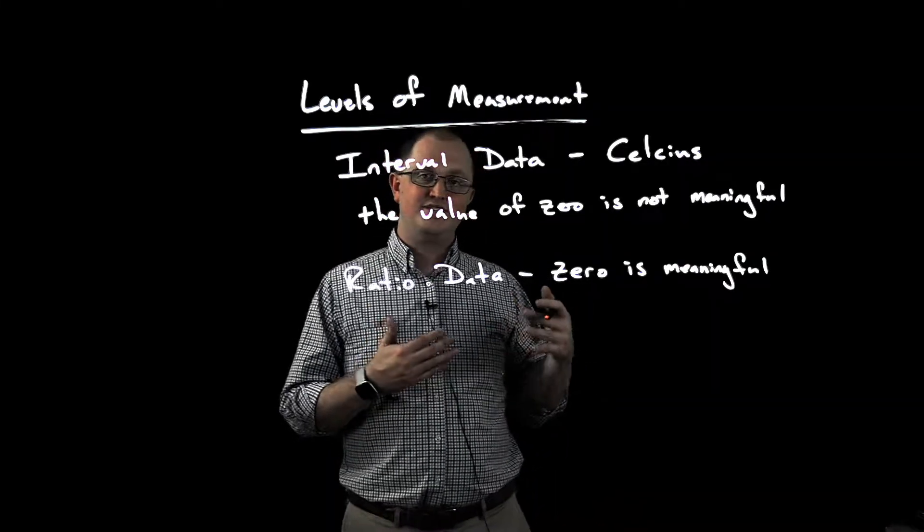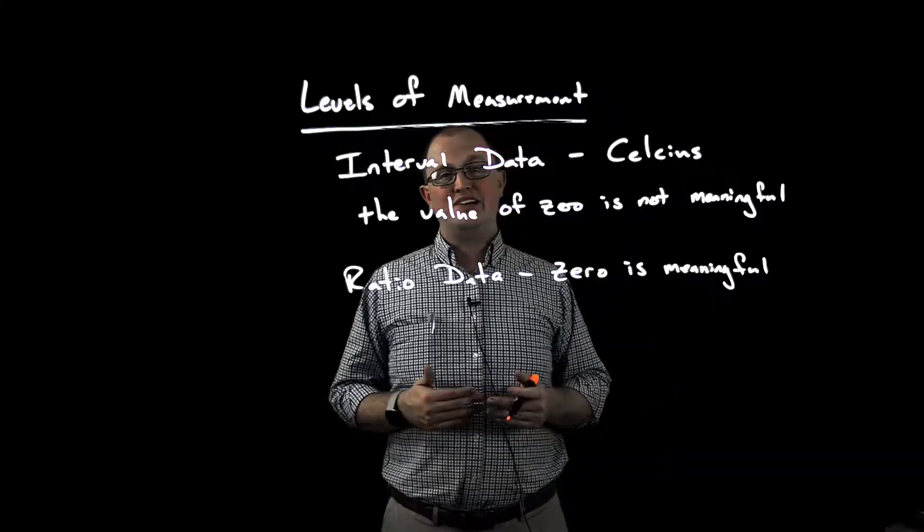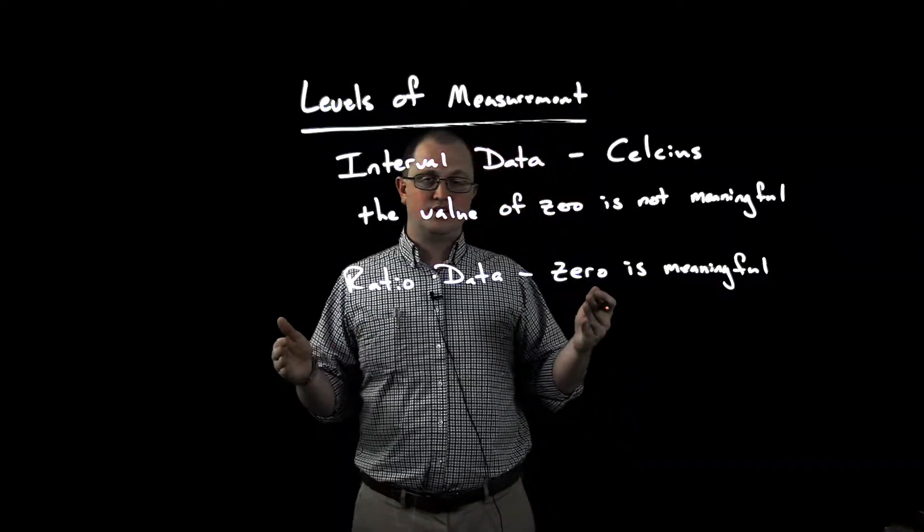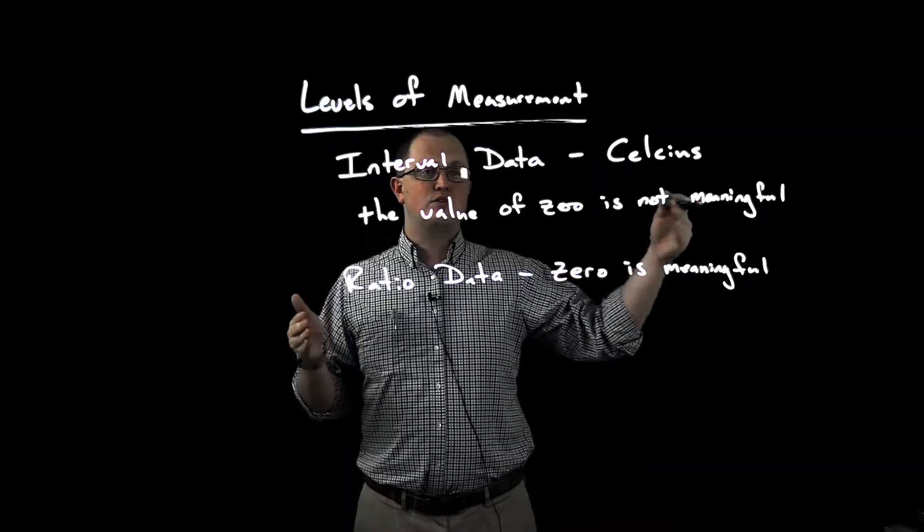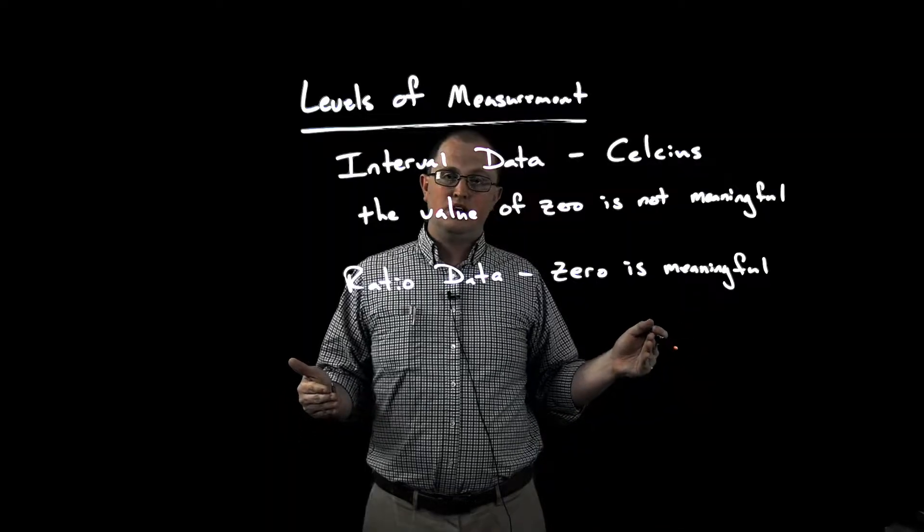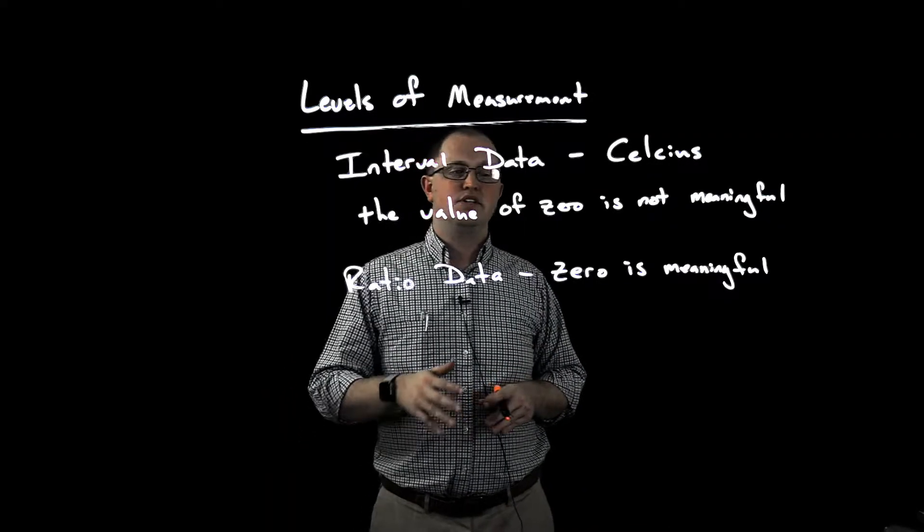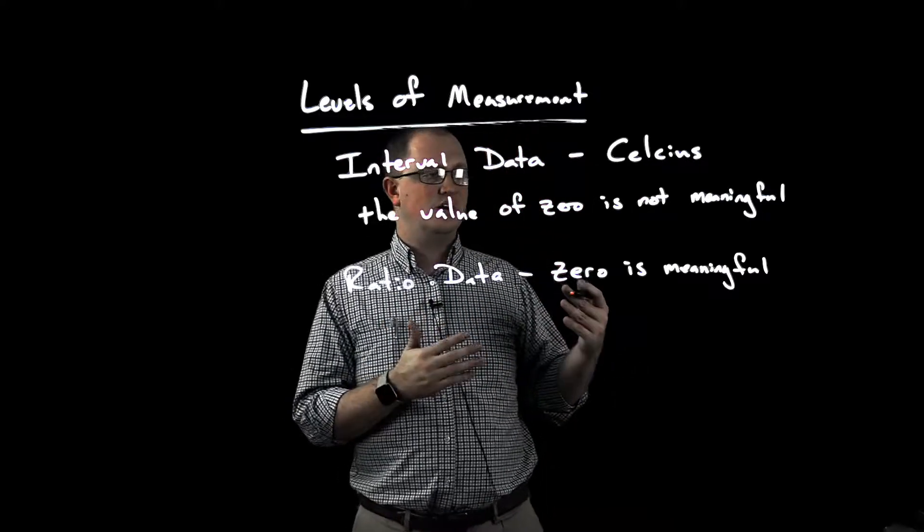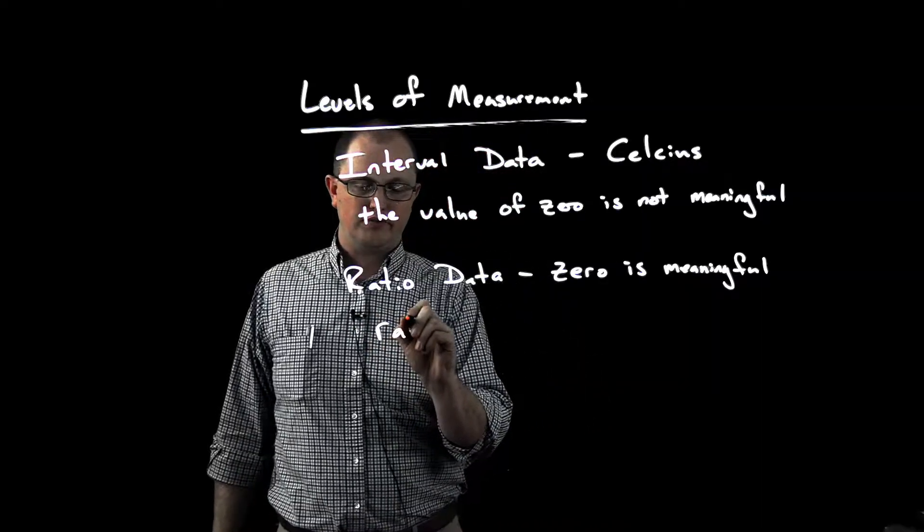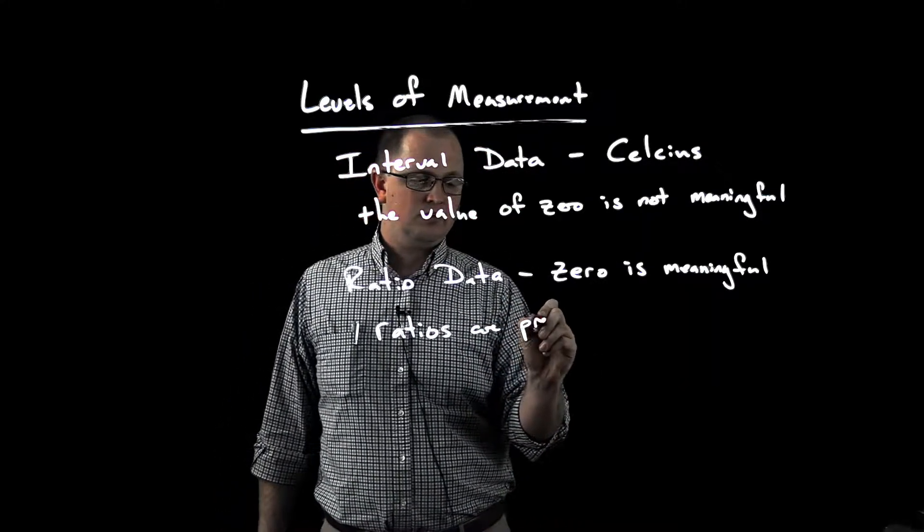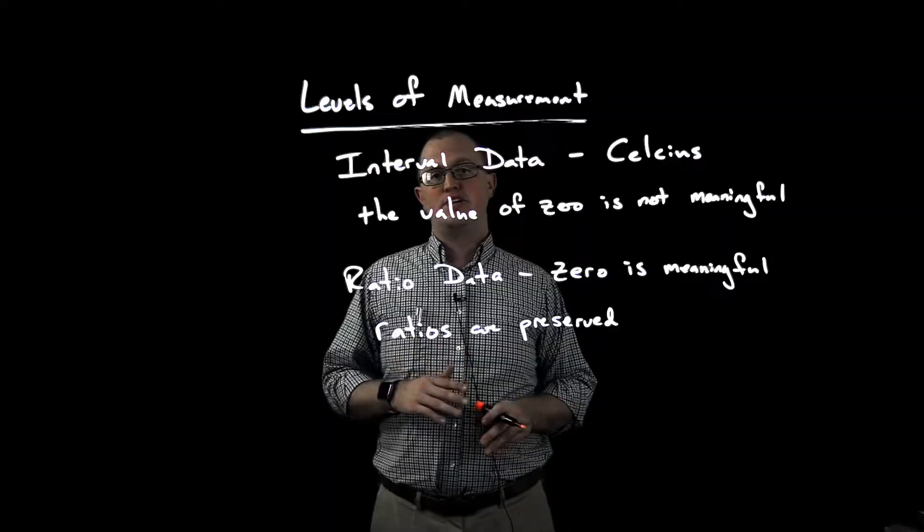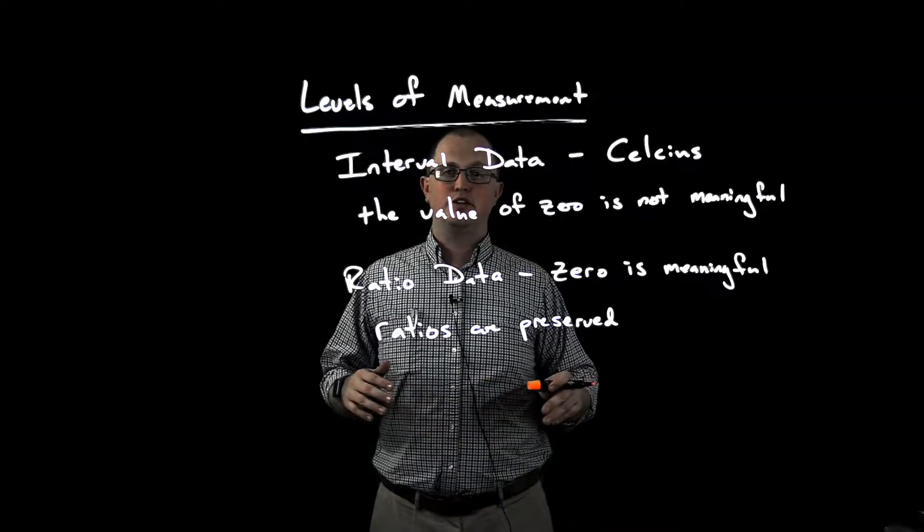Whenever we have a weight of zero, that means there is no weight. Whenever we have a length of zero, that means there is no length. And so that means if we have a piece of string that is six inches long and we have a piece of string that is 12 inches long, we can say that that second string is twice as long as the first string. So this fact that zero is meaningful and generally means there's an absence of whatever we're measuring at zero means that ratios are preserved. Ratios are preserved and they're meaningful. So these are the four types of data measurements that we're going to talk about this semester.